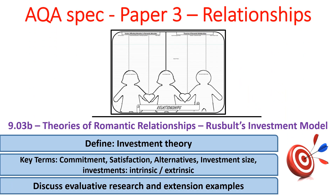Hello and welcome to PsychBoost. In this video we'll be looking at Rusbult's investment model as our next theory of romantic relationships. We'll need to define what investment theory is, and we'll use the key terms commitment, satisfaction, alternatives, and investment size. We'll categorise investment as intrinsic and extrinsic, and as usual we'll give you some pieces of research to use in an essay and some examples of ways we can extend our evaluation.